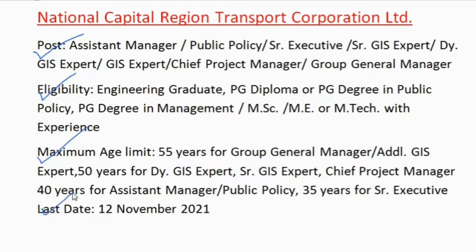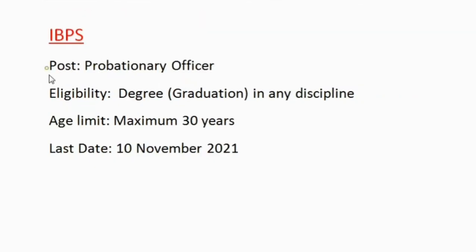35 years for Senior Executive. Institute of Banking Personnel Selection vacancy for Probationary Officer. Eligibility: Graduation in Any Discipline. Age Limit: Maximum 30 years. Last Date for Application: 10 November 2021.